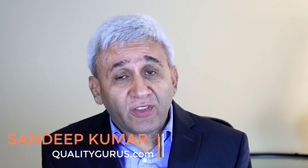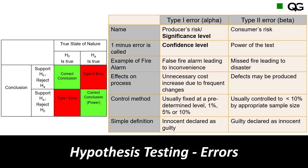After having that basic understanding about Type 1 and Type 2 errors, let's look at this table which explains these two types of error in a bit more detail. I'm spending some extra time on these basic topics because I want to make sure you understand them very clearly. Doing those statistical tests is easy — you can just follow some steps — but having this basic understanding is really important.